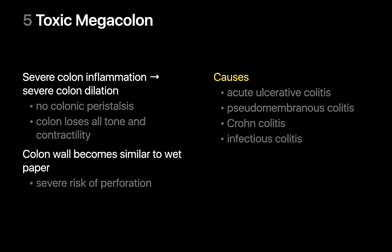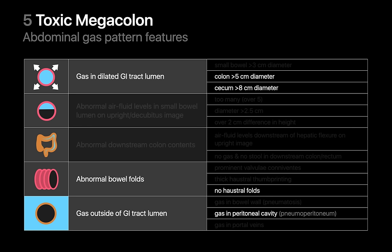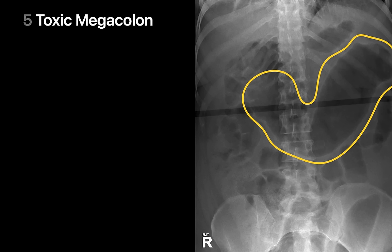Toxic megacolon is a complication that can occur in the setting of severe colon inflammation or infection, resulting in complete loss of the colon's neurogenic tone. With loss of neurogenic tone, severe colonic dilation develops with the risk of perforation. X-ray findings are severe colon distension and loss of haustral folds — dilation of the transverse colon can be as great as 15 centimeters in diameter. In this example, the transverse colon is gas-filled, severely dilated, and relatively featureless as all the haustral folds are absent.